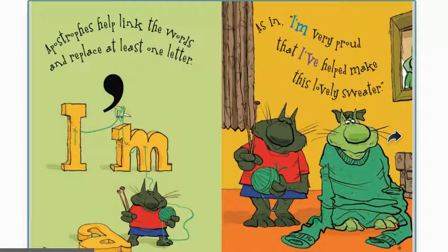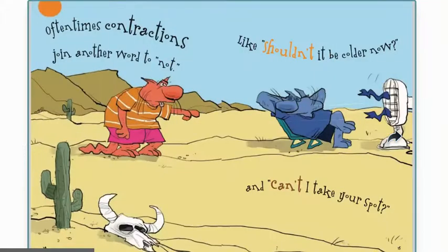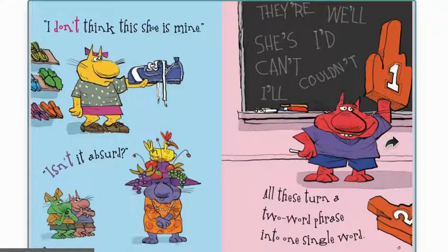Apostrophes help link the words and replace at least one letter, as in 'I'm very proud that I've helped make this lovely sweater.' Oftentimes contractions join another word to 'not,' like 'shouldn't it be colder now' and 'can't I take your spot?' I don't think this shoe is mine. Isn't it absurd? All these turn a two-word phrase into a single word.